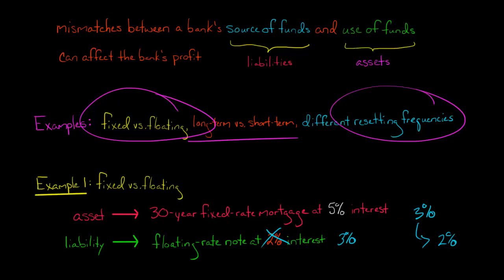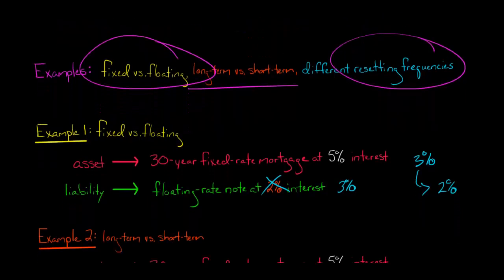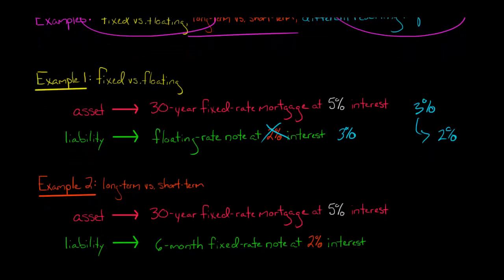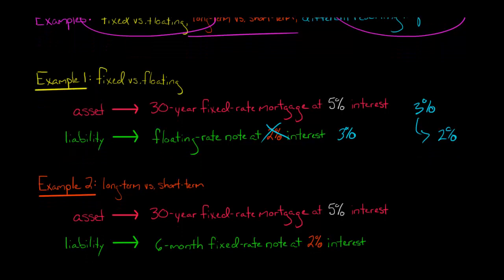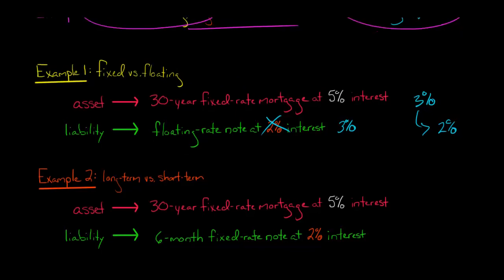This is the risk — this is what we're talking about with the earning gap and how the net interest income of the bank can be affected by this asset liability mismatch. We see here we had a fixed rate asset being funded by floating rate liabilities.